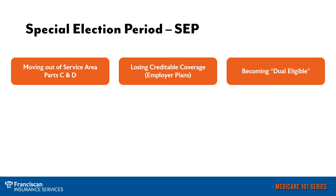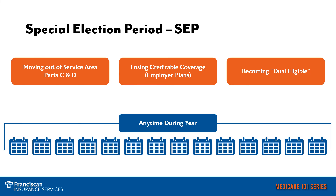The last special election period we will discuss is becoming dual eligible. When you are dual eligible, that means you qualify for Medicare and Medicaid. When you first qualify for Medicare and Medicaid, you would have a special election period to switch plans into a Medicare-Medicaid plan, or maybe just another Medicare Advantage plan or prescription drug plan. If you are dual eligible, you actually have a special election period every quarter of the year, except for the last quarter, because then you would be in the annual enrollment period. These special election periods, depending on your situation, could be any time of the year — they do not have a set time frame and could happen at any time.